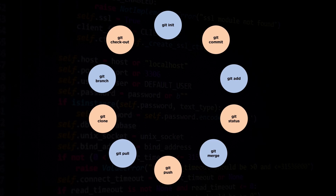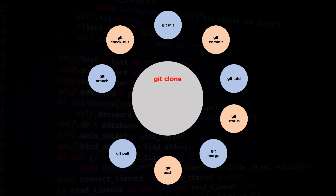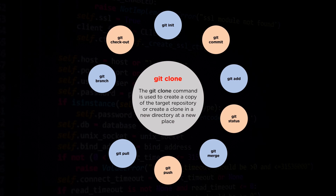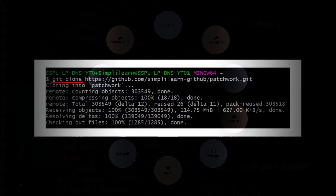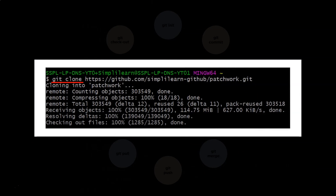The next command is the git clone command. The git clone command, as the name suggests, is used to create a clone or a copy of the target repository. The command creates a copy of the target repository in a new directory at a new place. Here we are using the clone or download link of a repository with the clone command, allowing the same code to have multiple versions running on the same machine.